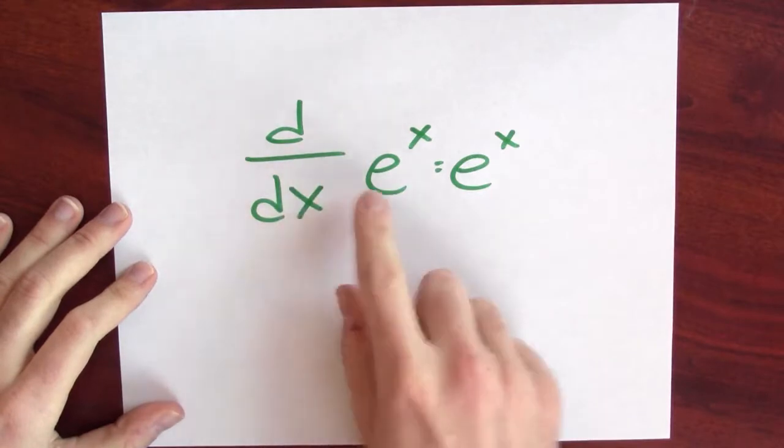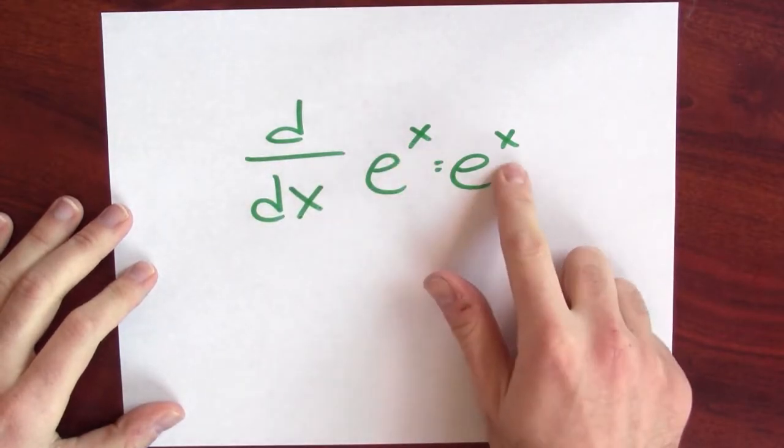In our quest for a function which was its own derivative, we met e to the x. Remember, the derivative of e to the x is e to the x.